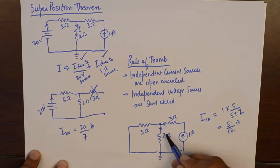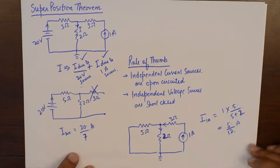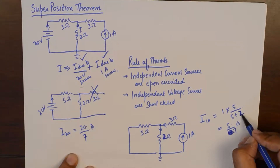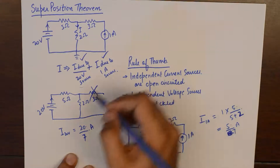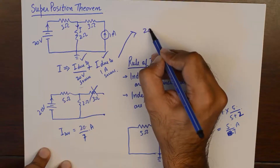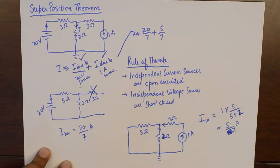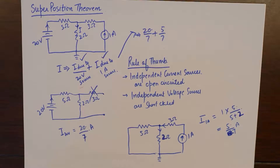The resistance in this branch is 2 ohms, so the current division gives 5 upon 7. The total current becomes 20 by 7 plus 5 by 7, which is logical. So Superposition Theorem says: find out current using each source and then add or subtract depending upon the direction of the current in that particular branch. Now there are some interesting superposition theorem questions that will try to trick any problem solver, so I will take up a few examples.